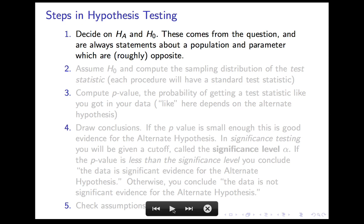Hypotheses will generally be of the form: p or mu equals some quantity, or p or mu is greater than, less than, or different from some quantity. For technical reasons, the null hypothesis always gets the equal sign. The alternate hypothesis always has a less than, greater than, or different from — sometimes implicitly. Conceptually, the null hypothesis is the default assumption — what you're going to assume in the absence of evidence — and the alternate hypothesis is the statement you are gathering evidence in support of.